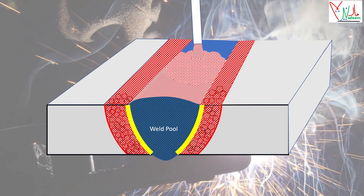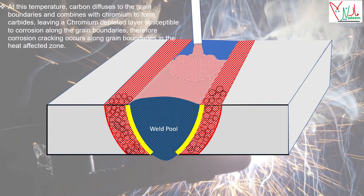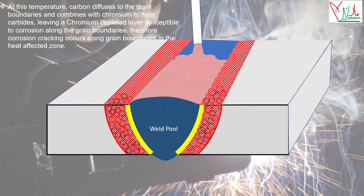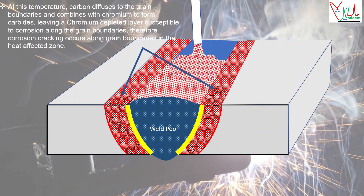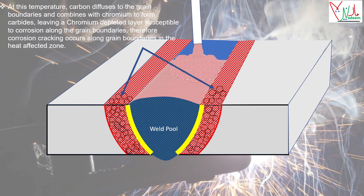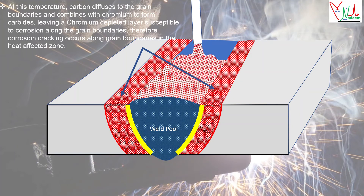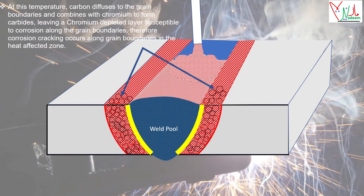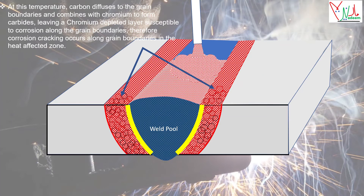At this temperature range, carbon diffuses to the grain boundaries and combines with chromium to form carbides, leaving a chromium-depleted layer susceptible to corrosion along the grain boundaries. Therefore, corrosion cracking occurs along grain boundaries in the heat-affected zone.